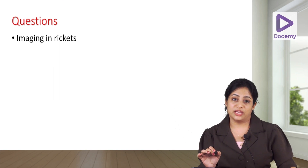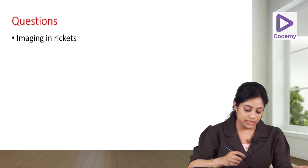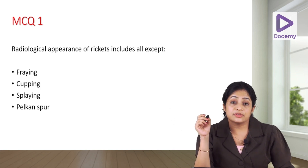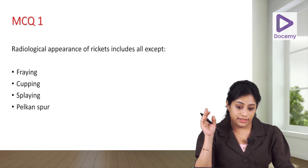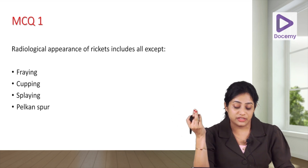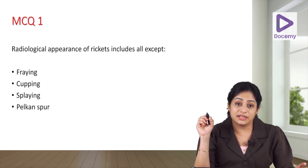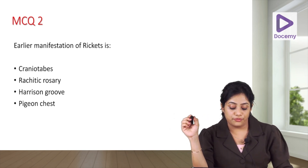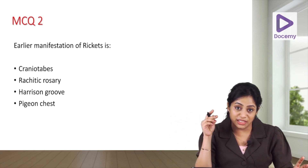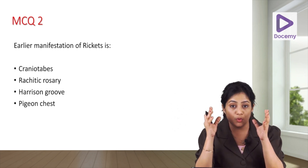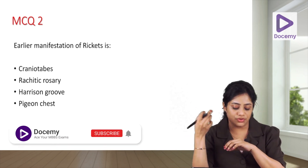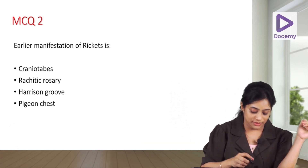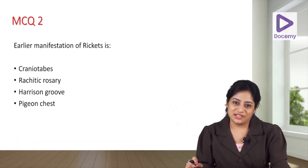Coming to exam questions: imaging in rickets itself is a common short note topic. MCQ 1: Radiological appearances of rickets include all except — fraying, cupping, and splaying are all seen, but pelican spur is not a feature of rickets. MCQ 2: The earliest manifestation of rickets is craniotabes, seen in infancy in the unfused skull bone. Rachitic rosary, Harrison's sulcus, and pigeon chest are seen in older children. So craniotabes is the answer. That's all about imaging in rickets.